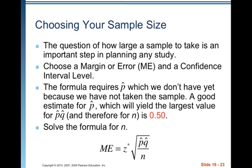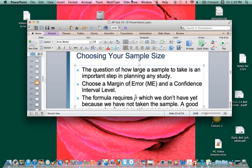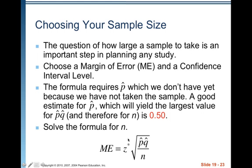Choosing your sample size: the question of how large a sample to take is an important step in planning any study. Choose a margin of error and a confidence level. The formula requires p-hat, which we don't have yet because we haven't taken the sample yet. A good estimate for p-hat that yields the largest value for p-hat × q-hat — and therefore the largest n — is 0.50. So if you have nothing else to go on, plug in 0.5 for both p-hat and q-hat, along with your chosen z* and margin of error, and solve for n.